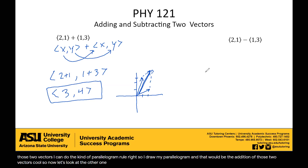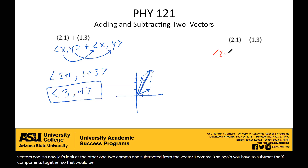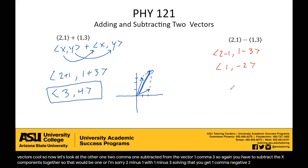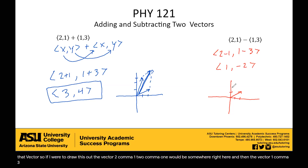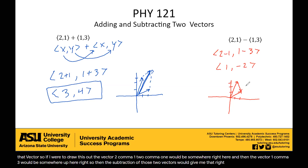Now let's look at the subtraction: (2, 1) subtracted from the vector (1, 3). You have to subtract the X components together, so that would be 2 minus 1 with 1 minus 3. Solving that, you get (1, negative 2). If I were to draw this out, the vector (2, 1) would be somewhere right here, the vector (1, 3) would be somewhere up here, and the subtraction of those two vectors would give me that right there — the vector (1, negative 2).